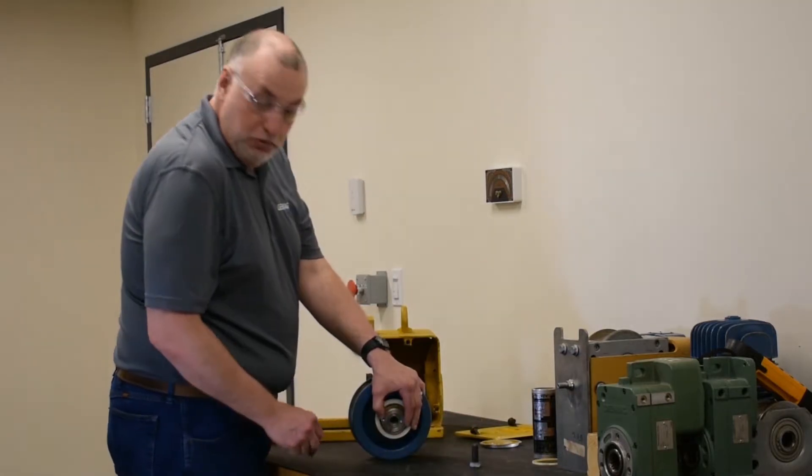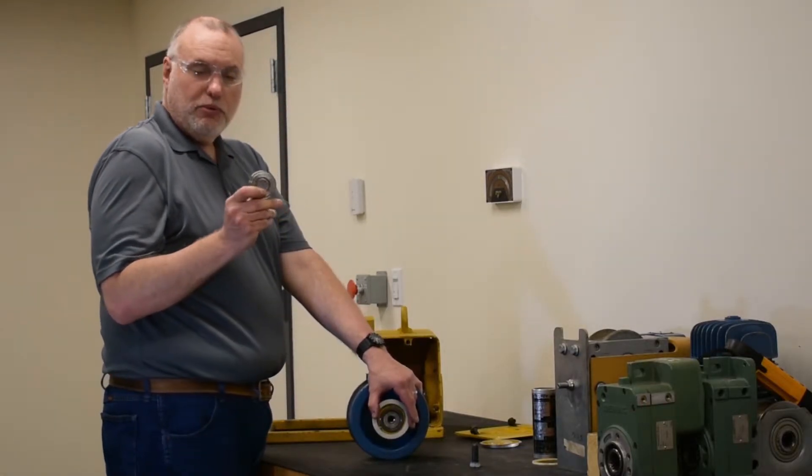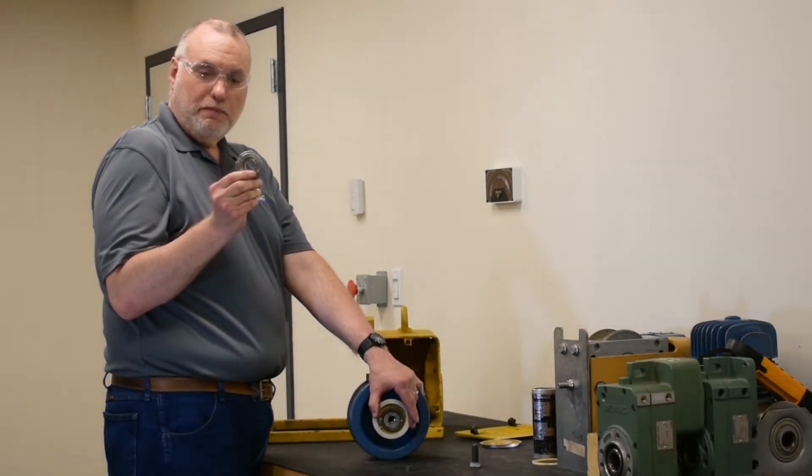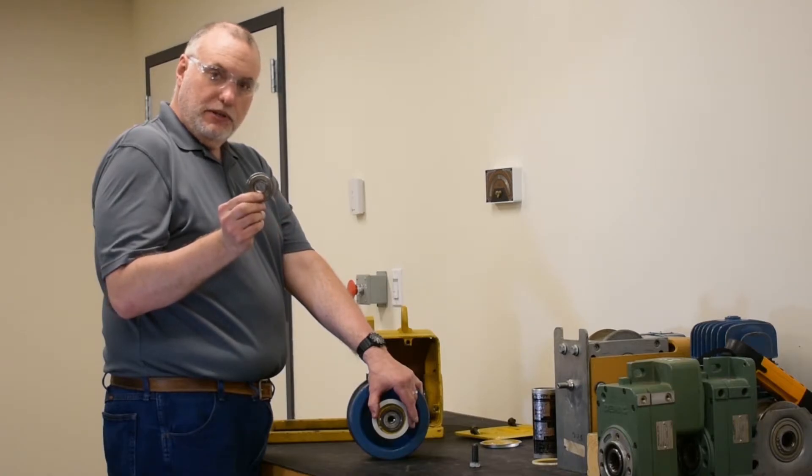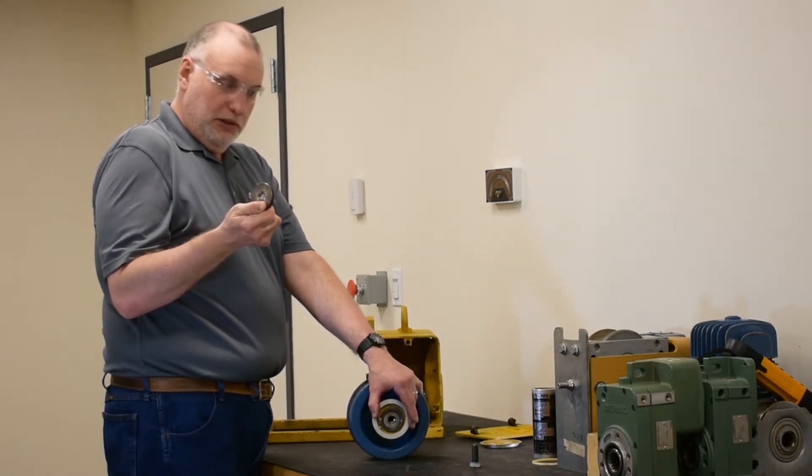Once the bolt is removed, I can show you the disc that the bolt acts against for pulling the axle into the wheel. We'll save this disc for future use for a mechanical disassembly using a puller.